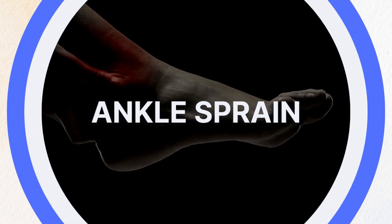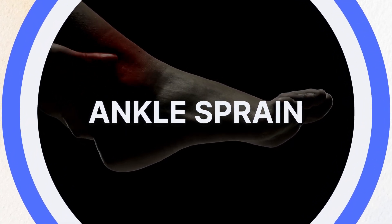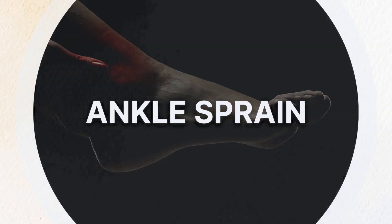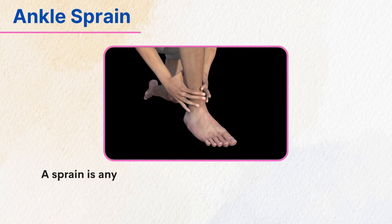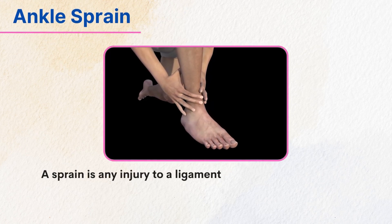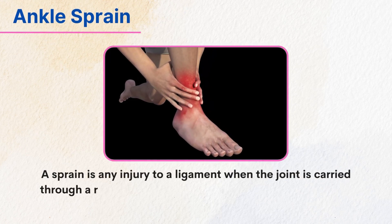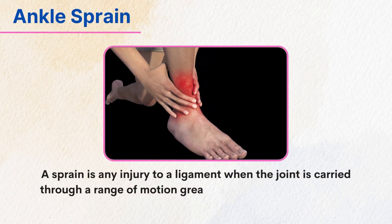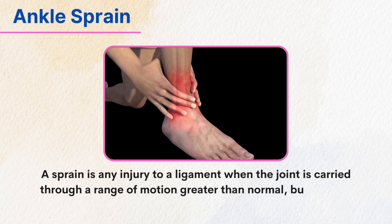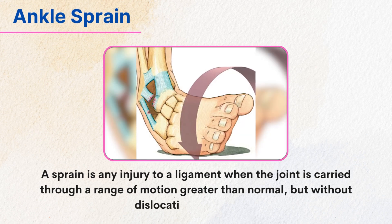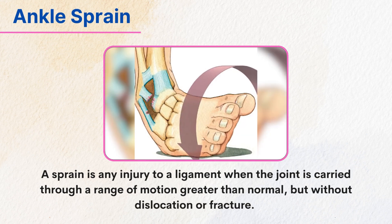Ankle sprain. A sprain is any injury to a ligament when the joint is carried through a range of motion greater than normal, but without dislocation or fracture.